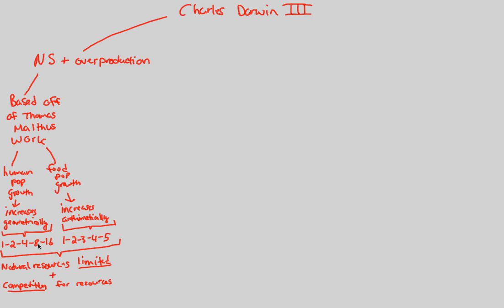When we say natural resources, think of them like this: natural resources are things like food, habitat, mates, hiding places — anything that is natural and needed for survival is a natural resource. There's a competition for environment, for territory, for food — all those things. This is all Thomas Malthus.